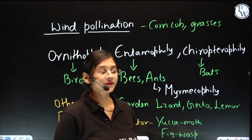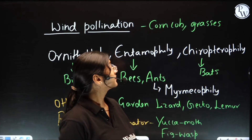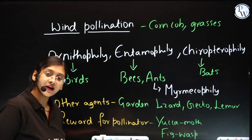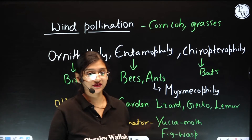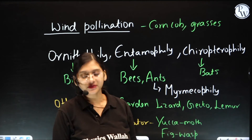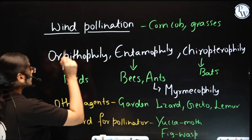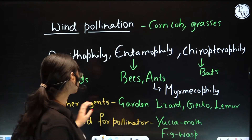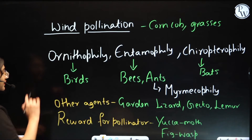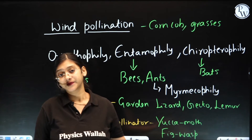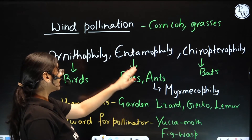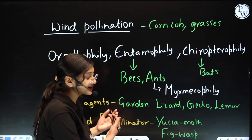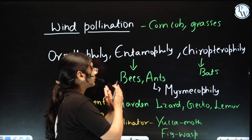Coming to biotic factors — there are different types of animals, birds, ants, and insects in general involved in pollination. Starting with ornithophily — ornitho means bird, so ornithophily is pollination with the help of birds. Entomophily — entomology means study of insects, so bees and ants belong to this particular type of pollination. As they are insects, we are able to see pollination with the help of these insects.